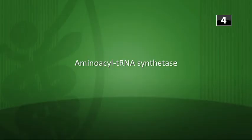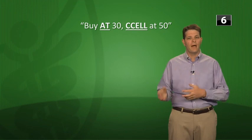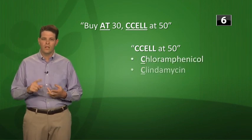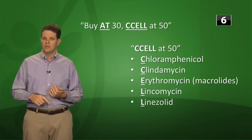End-of-session quiz: What enzyme matches amino acids to tRNA? That's aminoacyl-tRNA synthetase. What antibiotics inhibit prokaryotic protein synthesis at the 30S subunit? The mnemonic is 'buy AT 30, CELL at 50' — the A in AT is for aminoglycosides like gentamicin and tobramycin; the T is for tetracyclines. At the 50S subunit, CELL stands for Chloramphenicol, Clindamycin, Erythromycin and other macrolides like azithromycin and clarithromycin, Lincomycin, and Linezolid — plus the streptogramins.